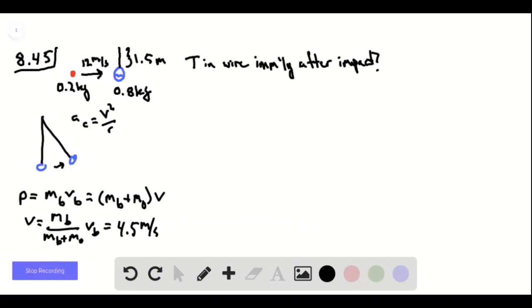Now if we consider a free body diagram for the ornament, we're going to have the tension in the wire acting upwards and the weight of the ornament acting downwards.